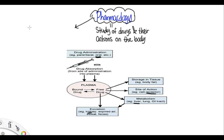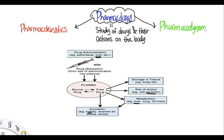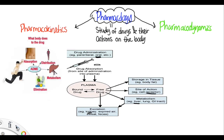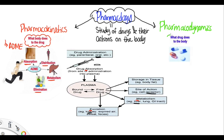Now when talking about pharmacology, there are two terms that come up: pharmacokinetics and pharmacodynamics. Pharmacokinetics is what the body does to the drug, while pharmacodynamics is what the drug does to the body.